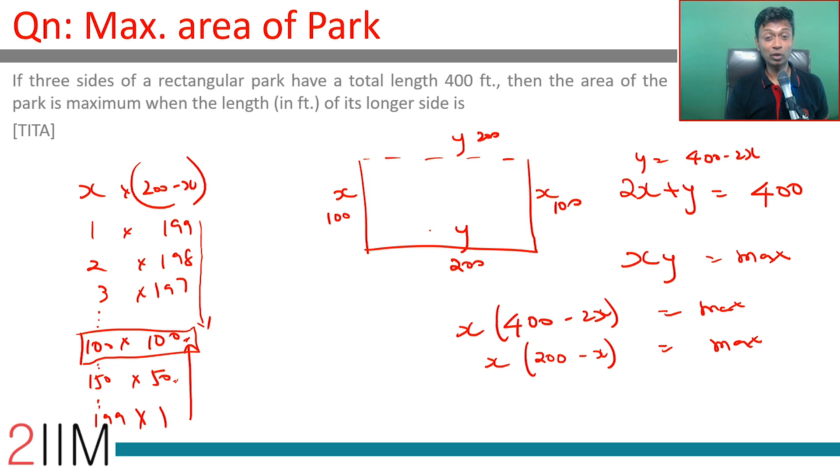The length of the longest side, which is y, should be 200 feet. If three sides add up to 400, then 2x plus y equals 400. We can maximize x times y when x equals 100 and y equals 200.